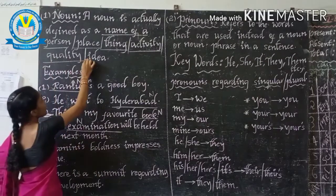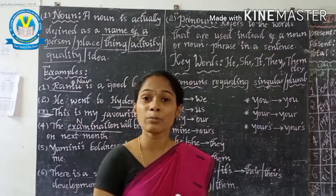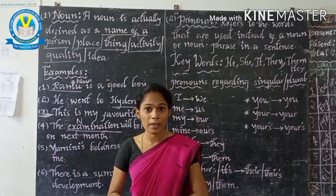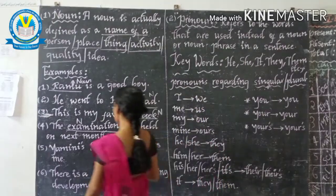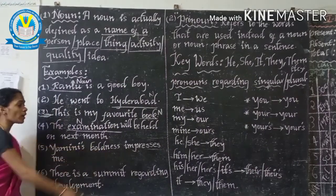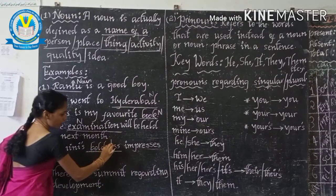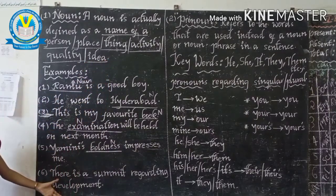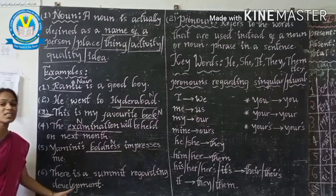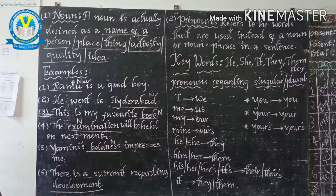The next category is quality. Quality means the person's characteristics, like boldness, anger, happiness, sadness. The example is: 'Boldness impresses me.' Boldness is the noun. The next category is idea. For example, a sentence mentioning development — development is an idea. So, development is the noun.